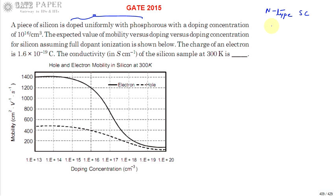In an n-type semiconductor, pentavalent impurities are added; they are called donors because each donor atom can give one extra electron, which becomes a free electron at room temperature or higher temperatures. The donor concentration — number of electrons in the n-type — is approximately equal to 10^16 per cm³. The expected mobility value is read from a diagram, and the charge of the electron is 1.6×10^-19 C. We need to find conductivity at room temperature.